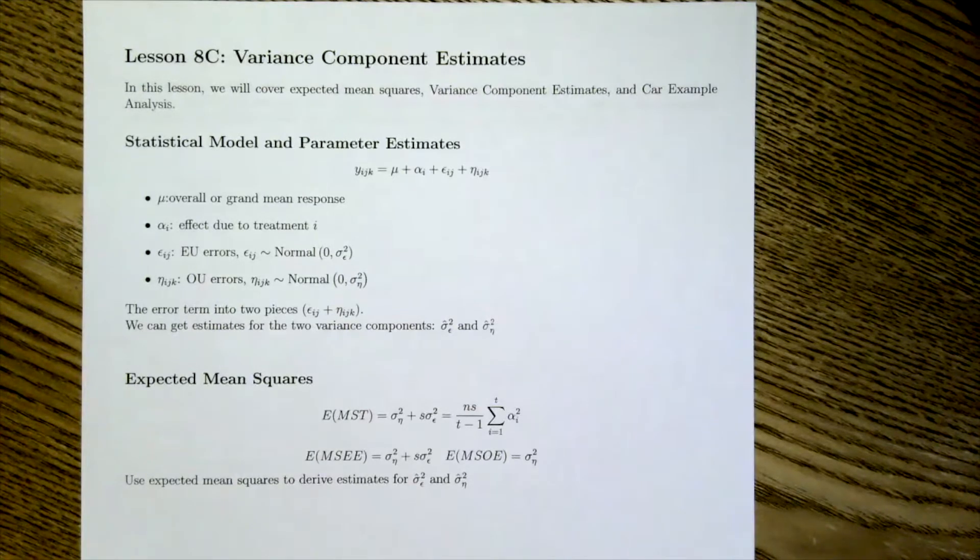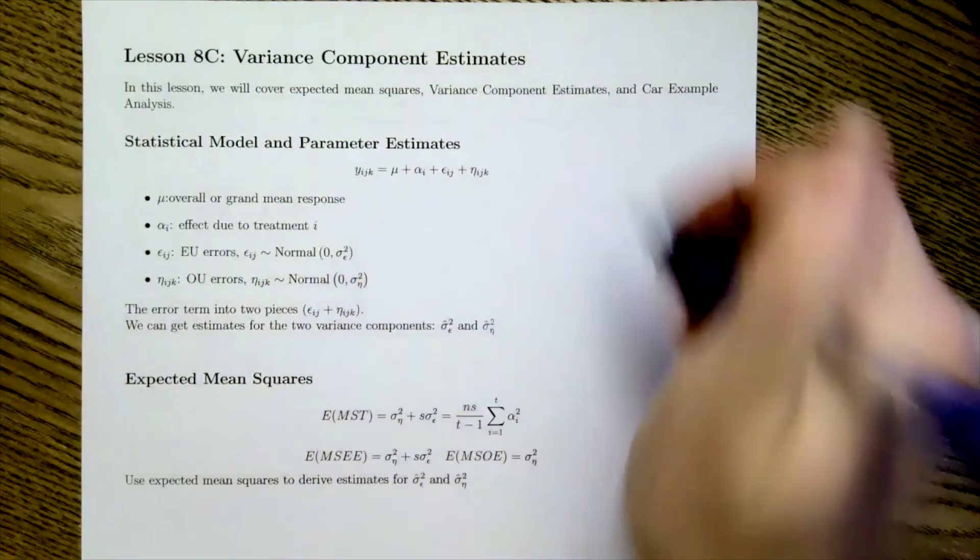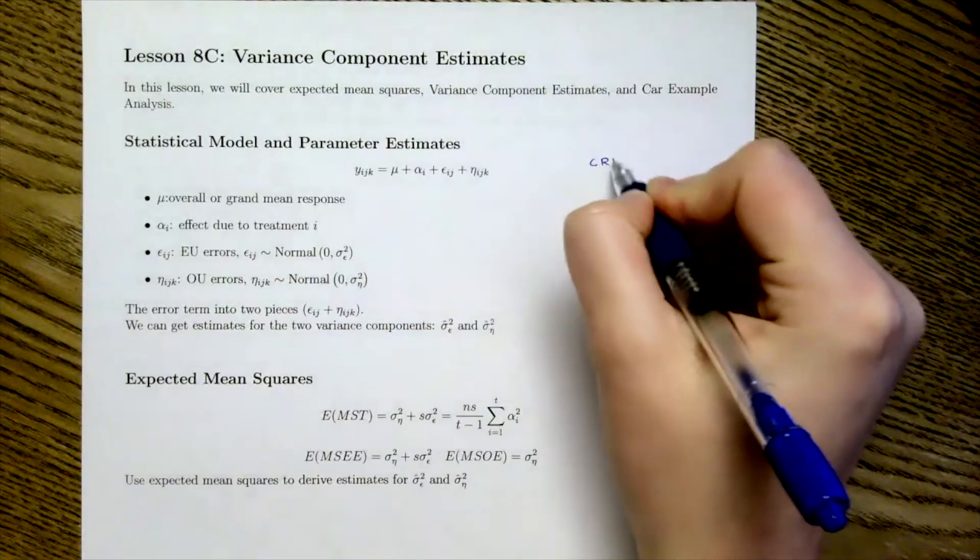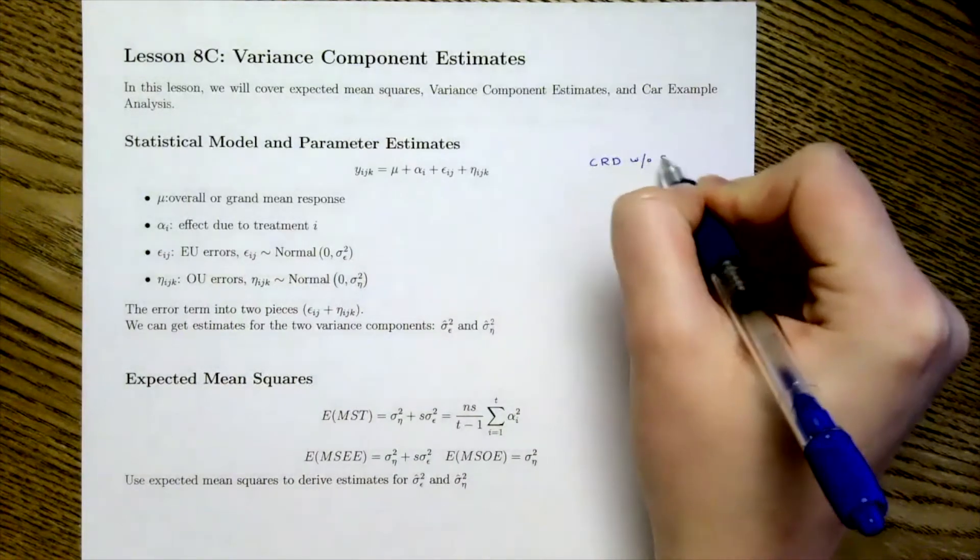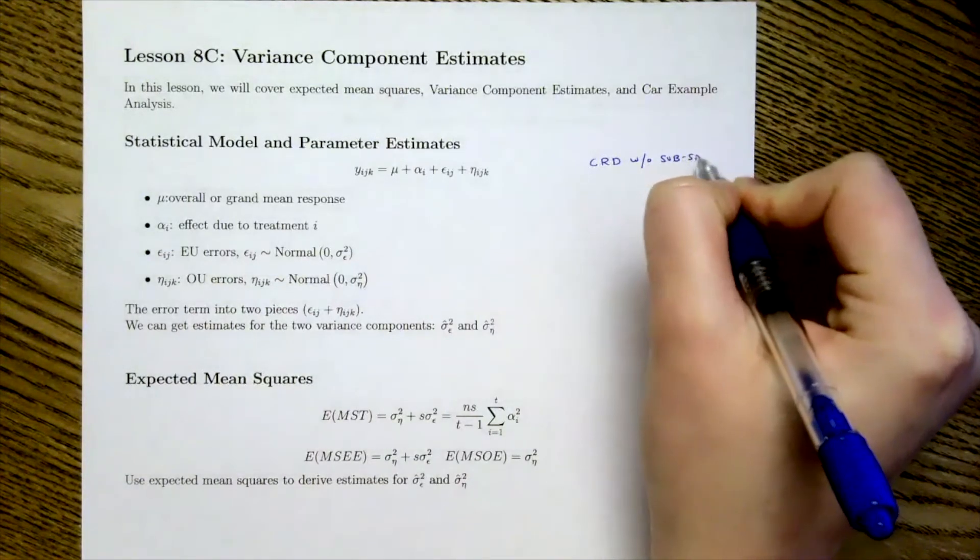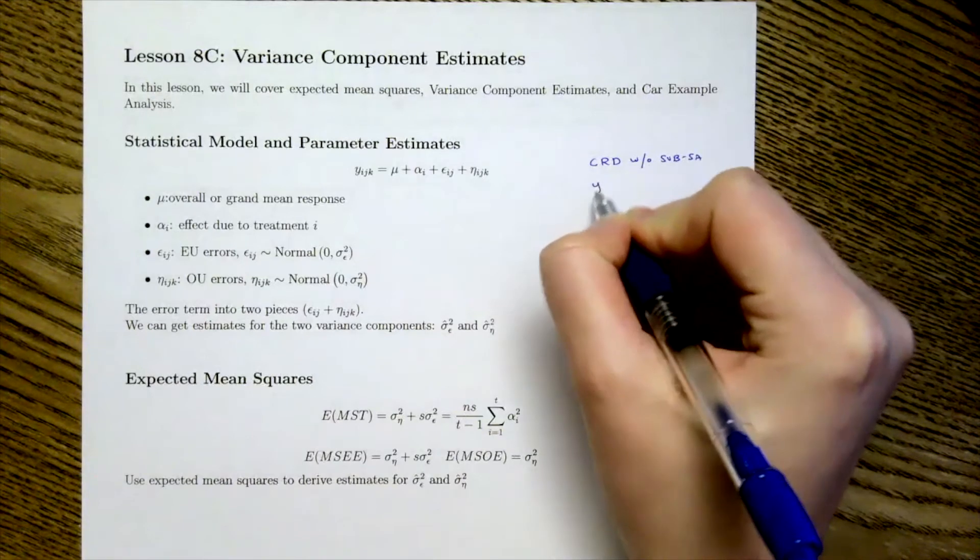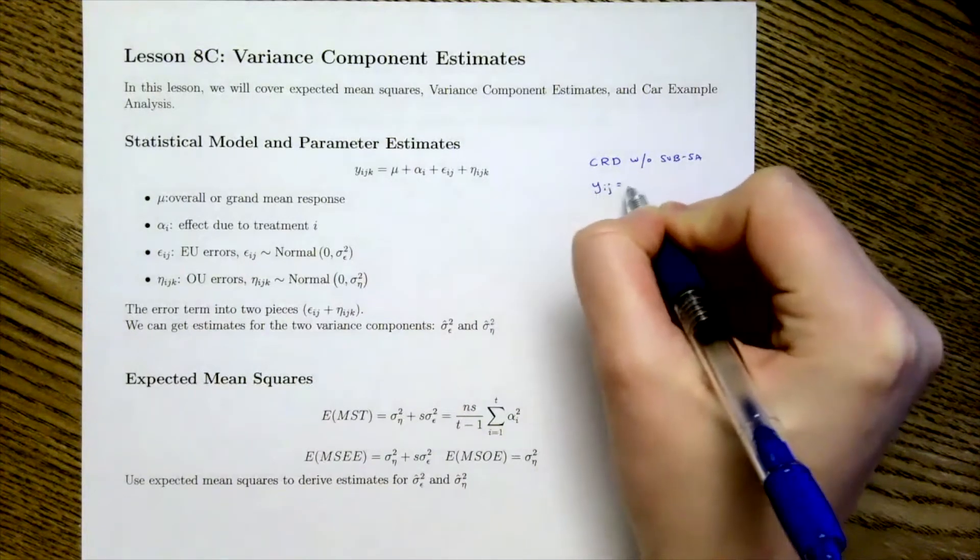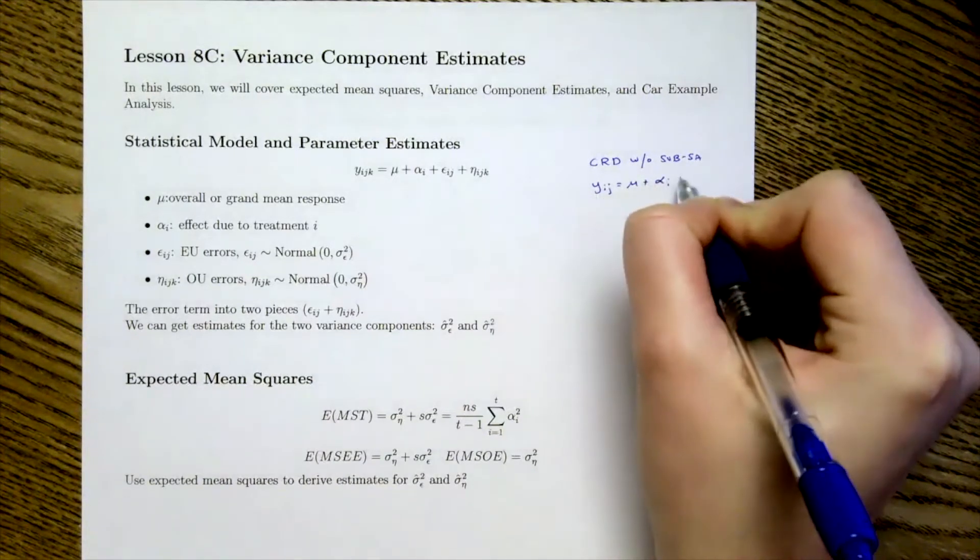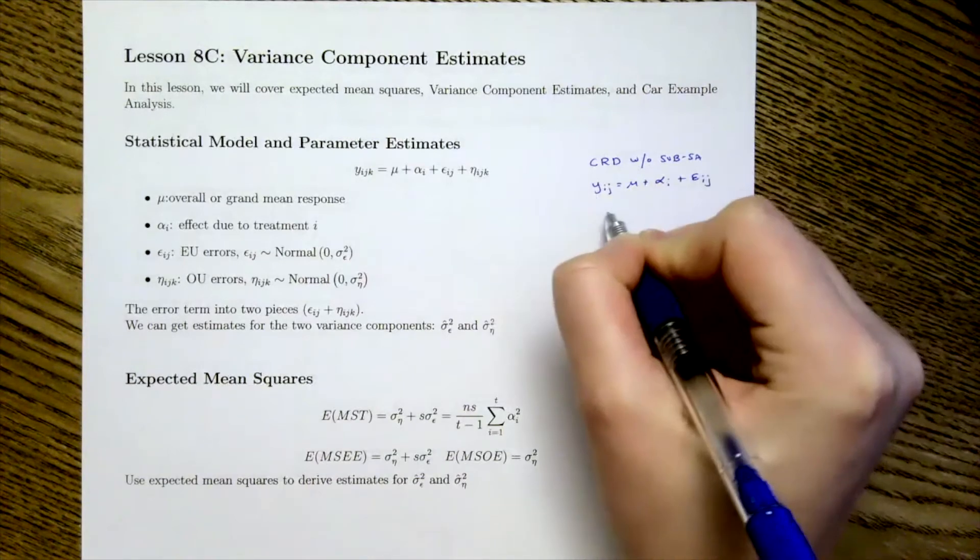To get started, let's just recap the statistical model that we talked about in our last lesson. Our statistical model for subsampling under the CRD case was here, where again, we took the CRD model without subsampling, our y_ij equal to mu plus alpha_i plus epsilon_ij, where in this case...